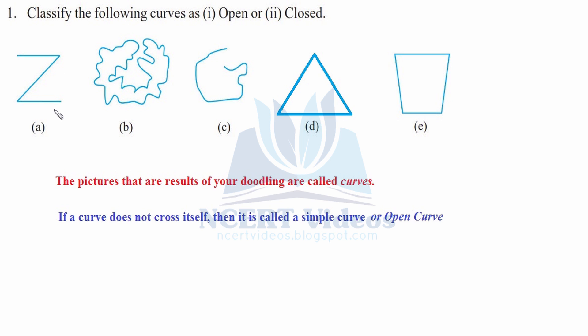First part A, it is written as Z. We can clearly see that it is a curve and it is open. It is not closed.